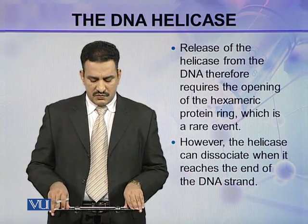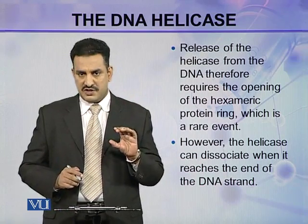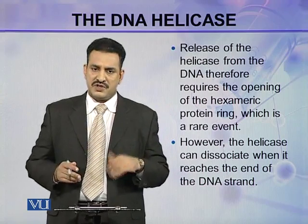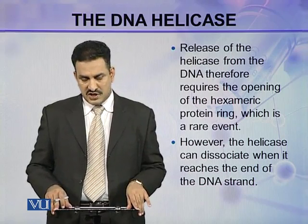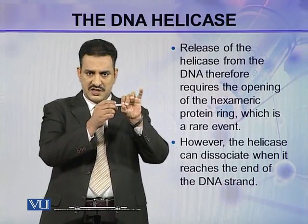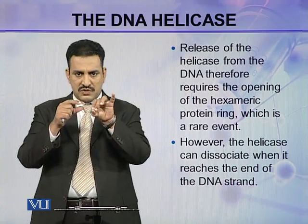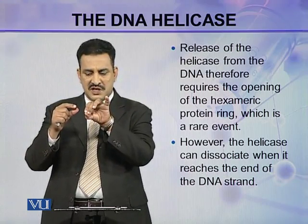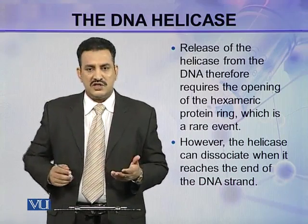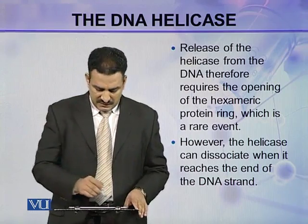Release of the helicases from the DNA therefore requires the opening of the hexameric protein ring, which is a rare event. This ring cannot easily be opened; if it is opened, it can release the strand, but this happens very rarely. However, the helicases can dissociate when they reach the end of the DNA strand. The helicase encircles the DNA strand and keeps moving as the replication fork moves, and when the replication fork reaches the end of the DNA duplex, both strands are opened up and the ring can exit the strand.